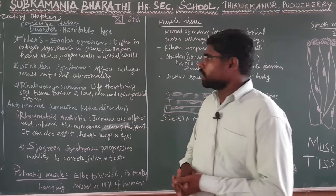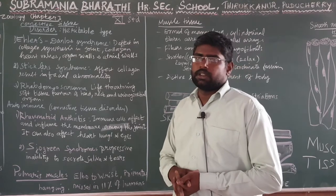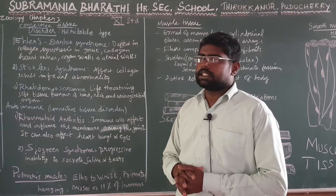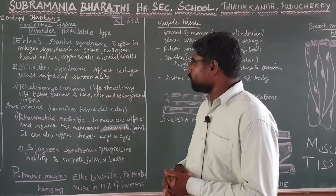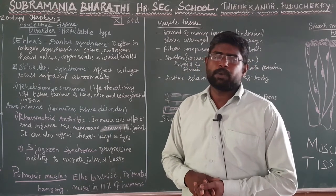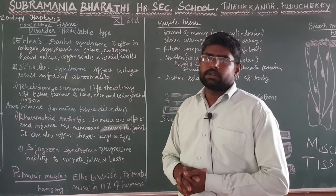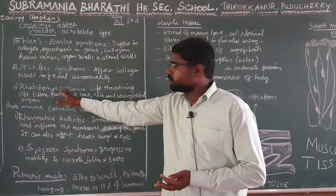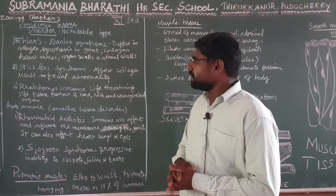Rhabdomyosarcoma is a life-threatening soft tissue tumor. It is a cancerous tumor found in the head region, neck region, and urogenital organs. Rhabdomyosarcoma is a muscle cancer.